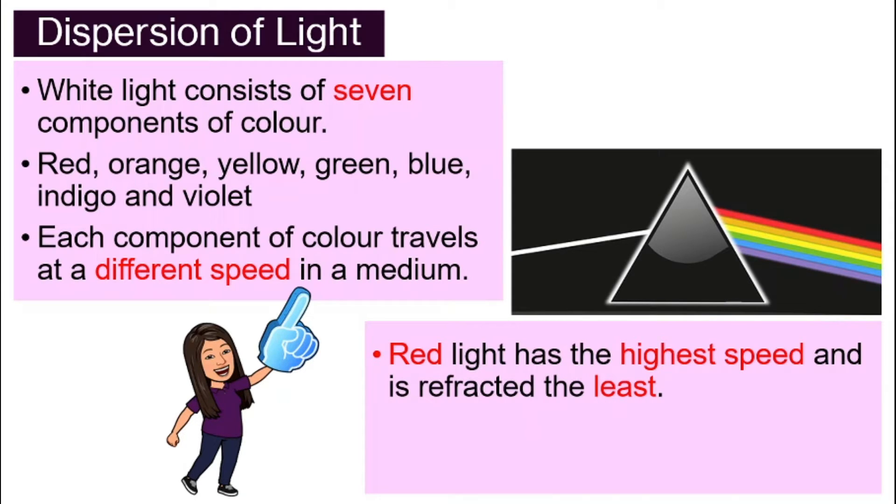So red light has the highest speed. It travels the fastest and hence it is refracted the least. If you remember refraction of light that we talked about in our previous video, if you forget, please go back and watch that video again. So the red light is being refracted the least. It changes direction the least when it is in glass prism. And hence when they leave the glass prism, red light is on top of the spectrum.